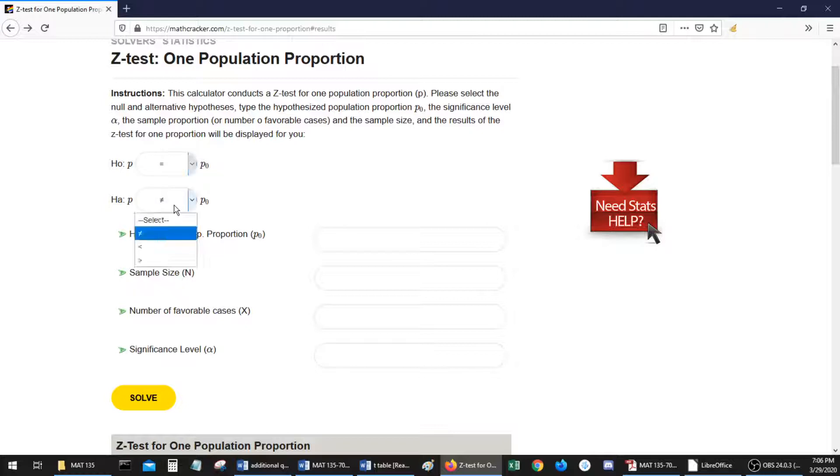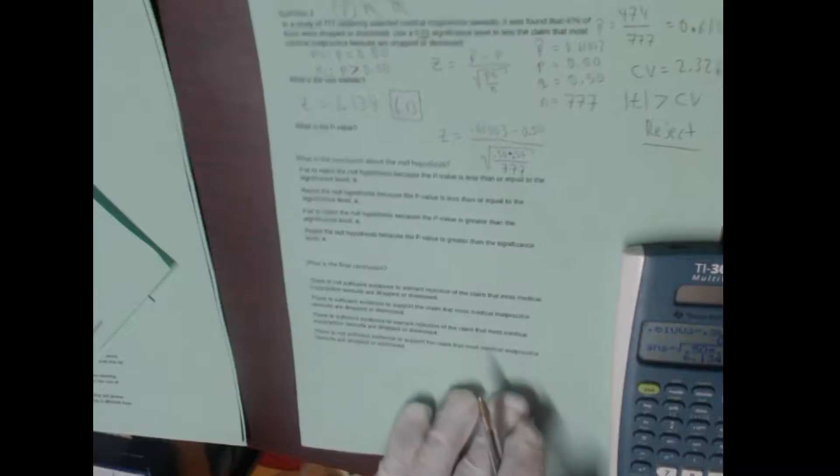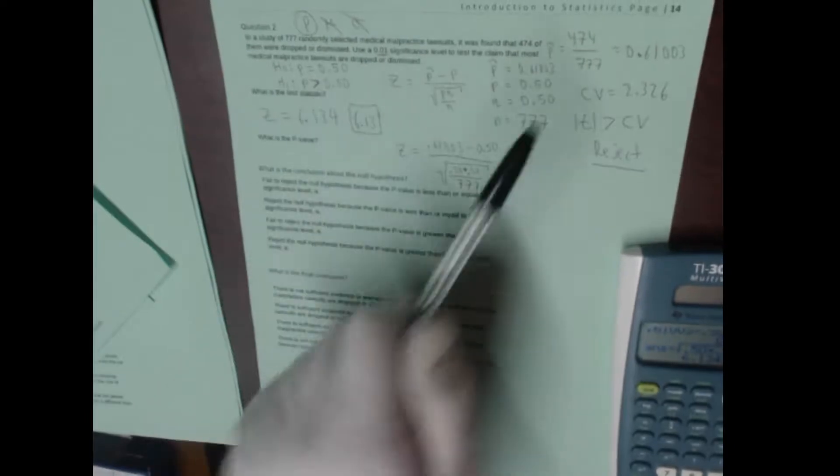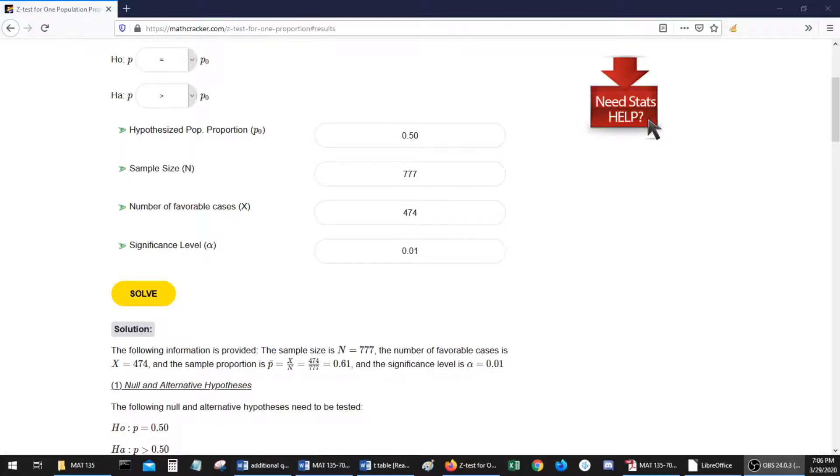Okay. Null hypothesis is always equal to. This time, our alternate hypothesis was that we were greater than, and the question was, are we greater than 0.50? Sample size was 777. The number of favorable cases was 474. So, I actually type in the number of cases on this calculator. The calculator will do the division for us, and our significance level was 0.01. That's all you got to do, and then you just click solve, and it thinks about it for a minute. Remember, we know that the p-value is going to have to be smaller than 0.01, because our test statistic was so much larger than the critical value. So, let's scroll down and find it.